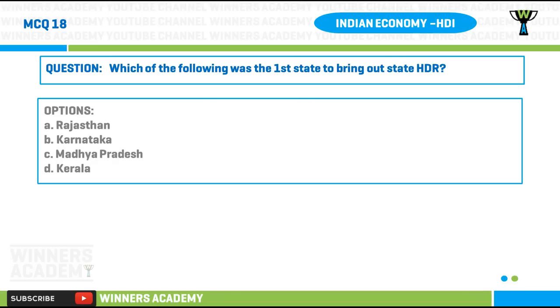Question number eighteen: which of the following was the first state to bring out a State Human Development Report? Options: A) Rajasthan, B) Karnataka, C) Madhya Pradesh, D) Kerala.